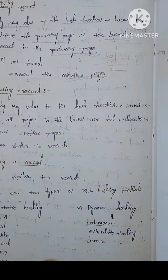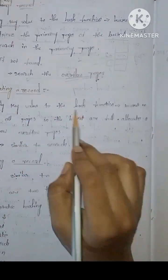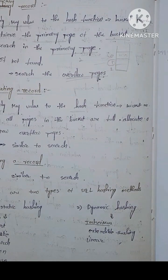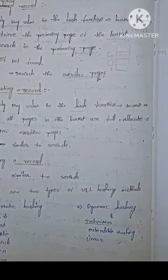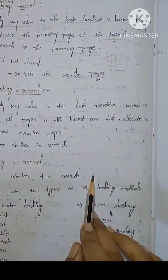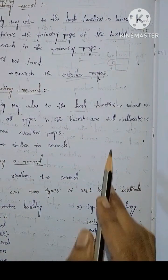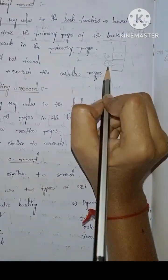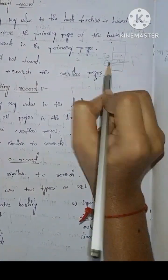Next one, inserting a record. Apply key value to the hash function. If all pages in the bucket are filled, allocate a new overflow page, similar to search. Next one, deleting a record, similar to search. We will search for the record and delete the same. Index is the same, 0, 1, 2, but there is a value in the delete type.